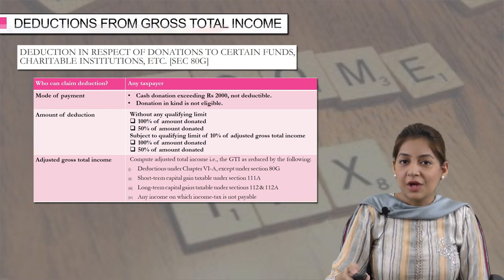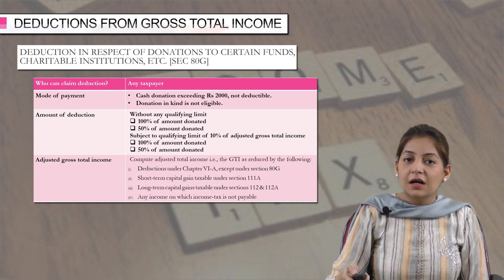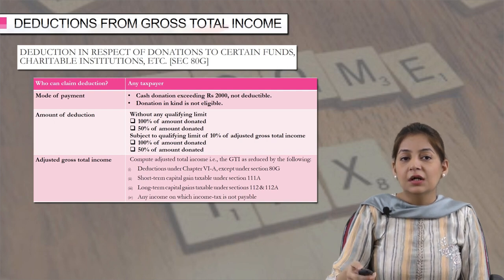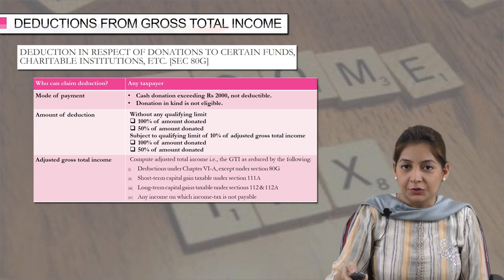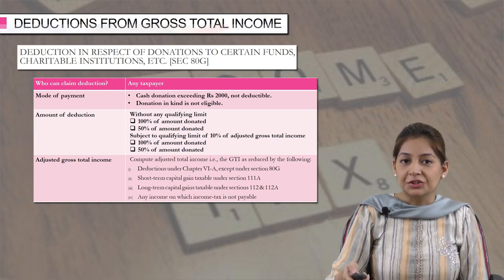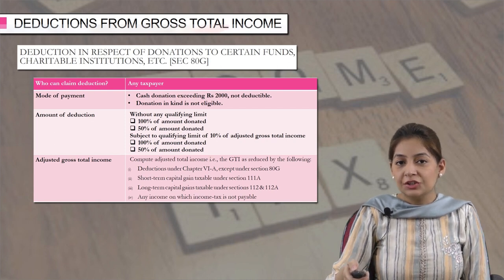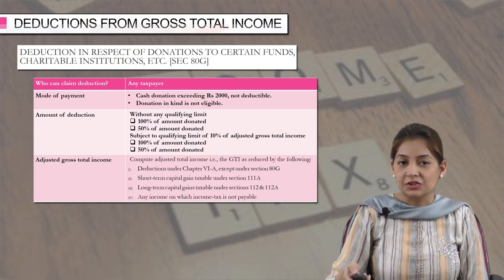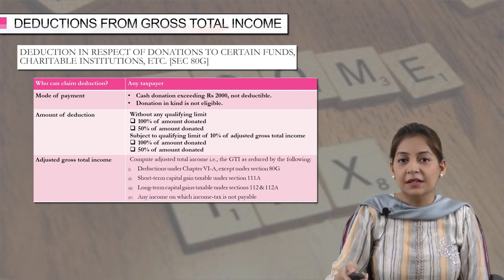Next, the deduction is under section 80G. We all know that doing charity and contributing some amount for welfare is considered a good deed. Under section 80G, you can claim the deduction if you have made any donation to certain funds or charitable institutions. The deduction can be claimed by any taxpayer, be it an individual, HUF, or company — irrespective of their status.